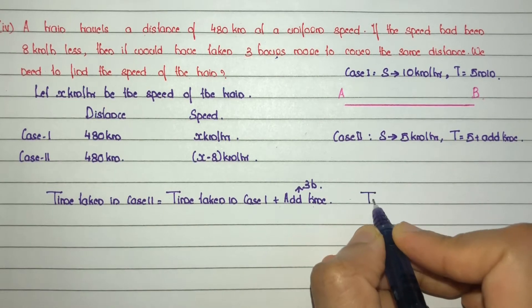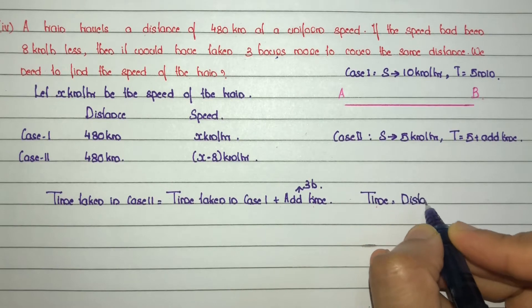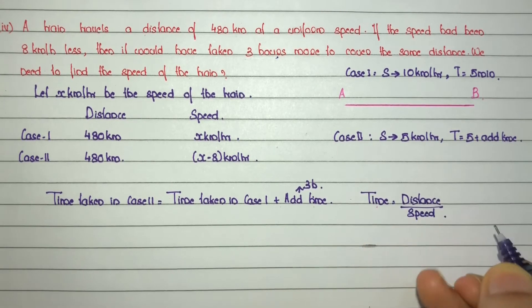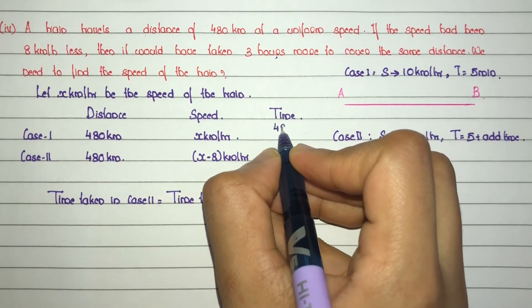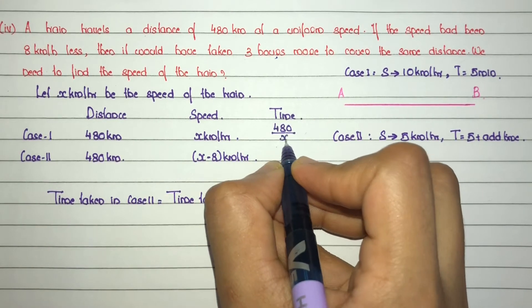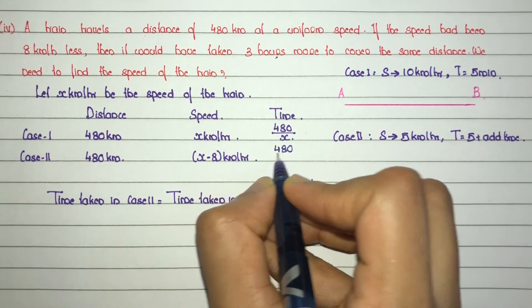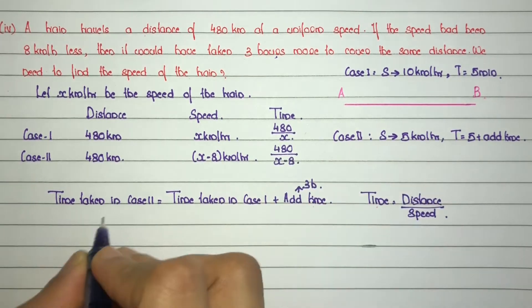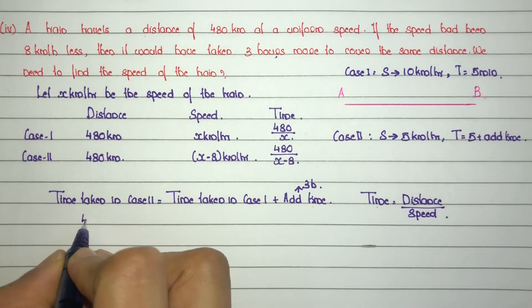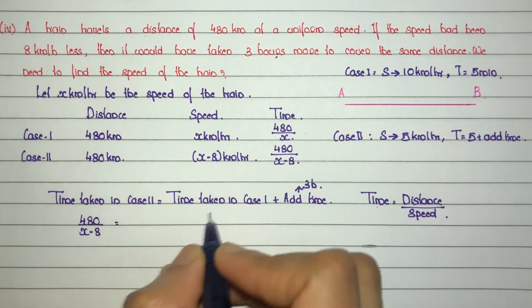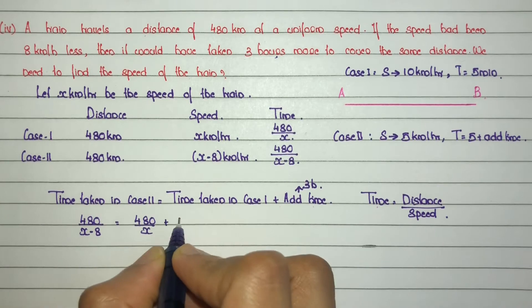We know that time is equal to distance divided by speed. So, first case time is equal to 480 divided by x. Second case time is equal to 480 divided by x minus 8. Substituting: time in Case 2, that is 480 by (x minus 8), equals time in Case 1, that is 480 by x, plus 3 hours.